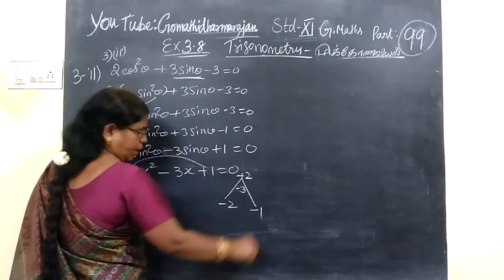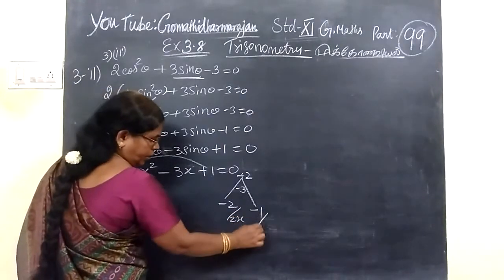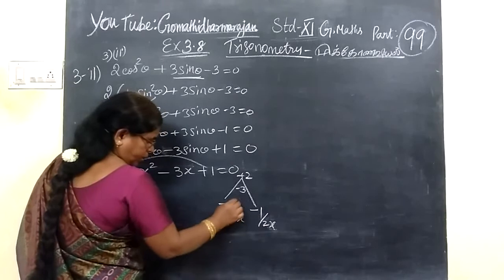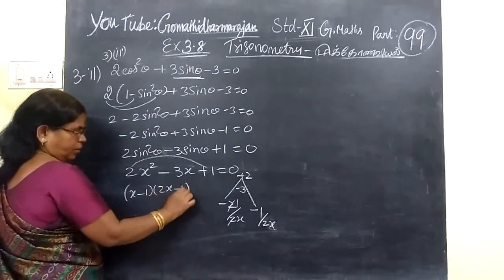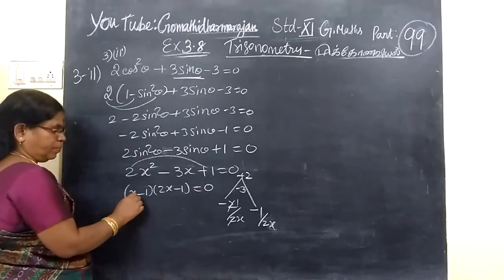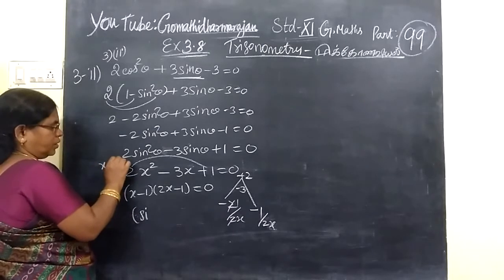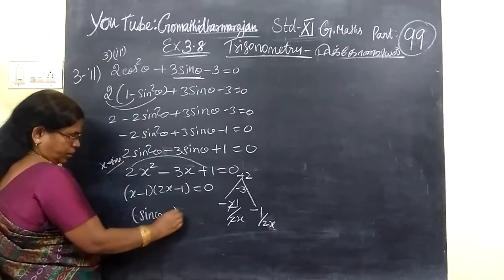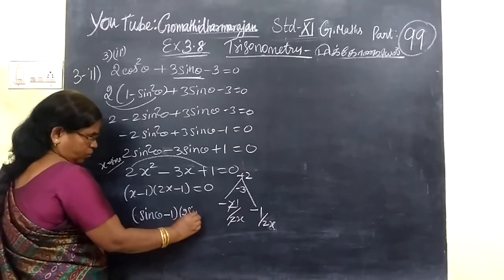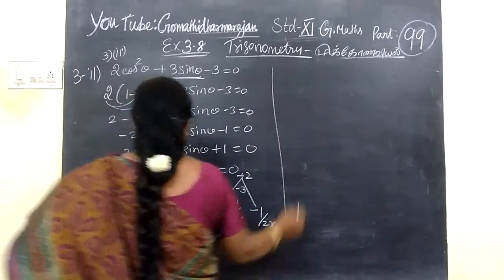Minus 2 minus 1. By 2 also we will write in the 2s here also 2s. You can write s minus 1, 2s minus 1 equal to 0. X minus which is sin theta, x equal to sin theta. So sin theta minus 1, then 2 sin theta minus 1 equal to 0.